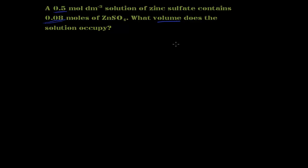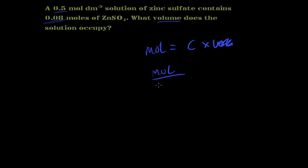This is a very similar question to the last one. Starting from moles equals concentration times volume, we divide both sides by the concentration, so volume equals moles divided by concentration. To get the volume I divide 0.08 by the concentration of 0.5.